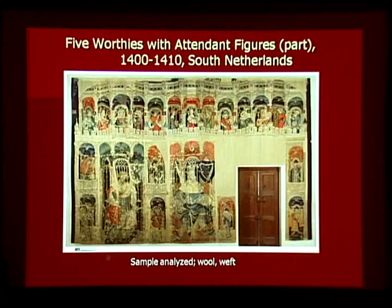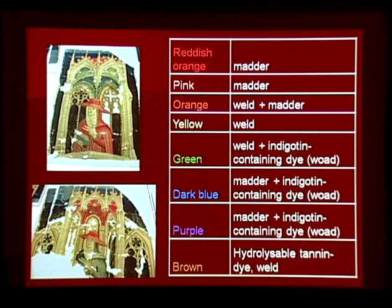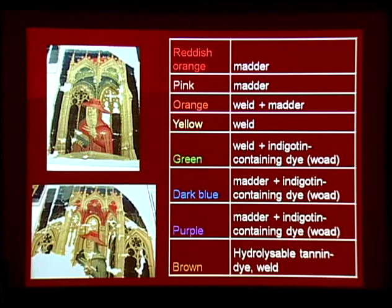The next tapestry was probably made in the South Netherlands at the beginning of the 15th century. Dyes used on some fragments of this tapestry were analyzed. The three principal dyes — madder, weld, and woad — and their mixtures were the main dyes used. The purple sample appeared to use a mixture of madder and woad. In the case of purple dyes with madder, there are two method types: one is dyeing with a mixture of madder and woad, and the other is dyeing with madder only, probably using iron mordant. In this case, woad was used with madder to dye purple.